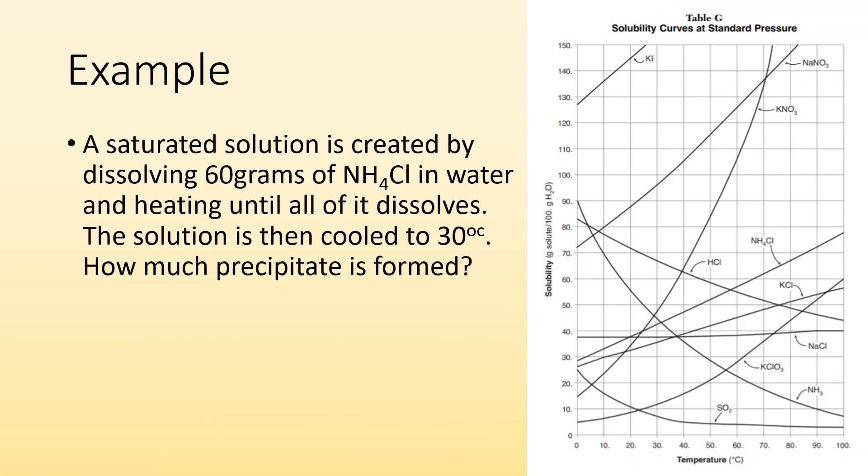Another example, a saturated solution is created by dissolving 60 grams of NH4Cl in water, let's say a hundred grams water, and heating it until all of it dissolves. The solution is then cooled to 30 degrees Celsius. How much precipitate is formed? All right. Well, it's saying that originally we dissolved 60 grams, but then we cooled it to 30 degrees Celsius. So we were right here, but where's the line for NH4Cl? Here it is.